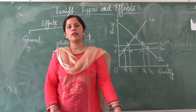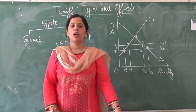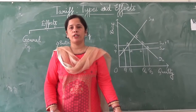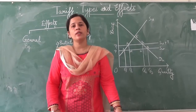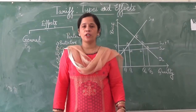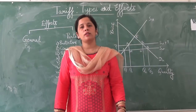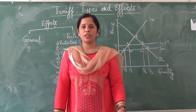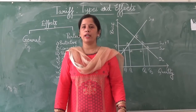The main assumptions are: the country is very small because it cannot influence the price of the rest of the world. The second assumption is there is perfect competition in the economy. Third, there is a homogeneous product and the supply curve of the rest of the world is perfectly elastic.